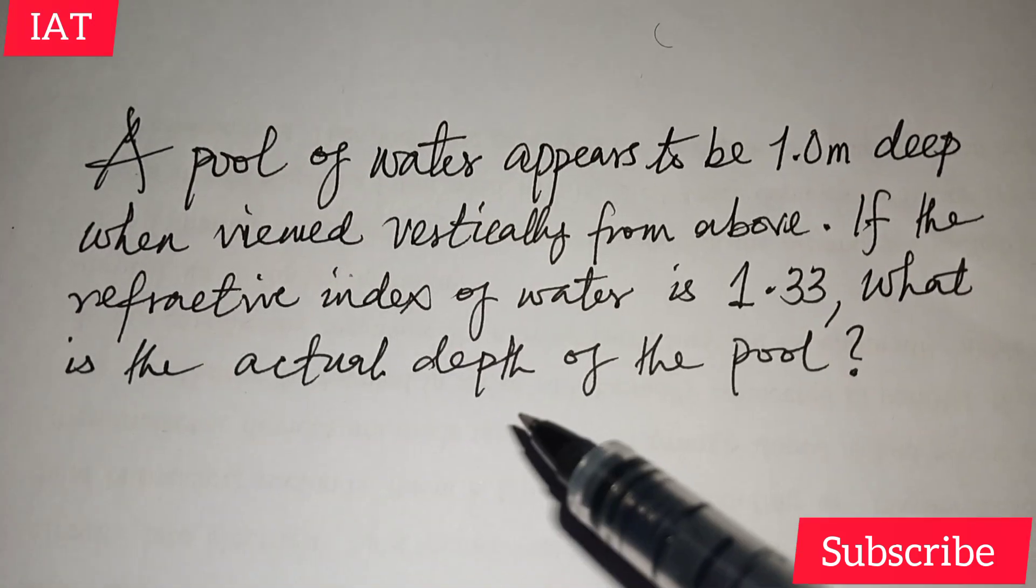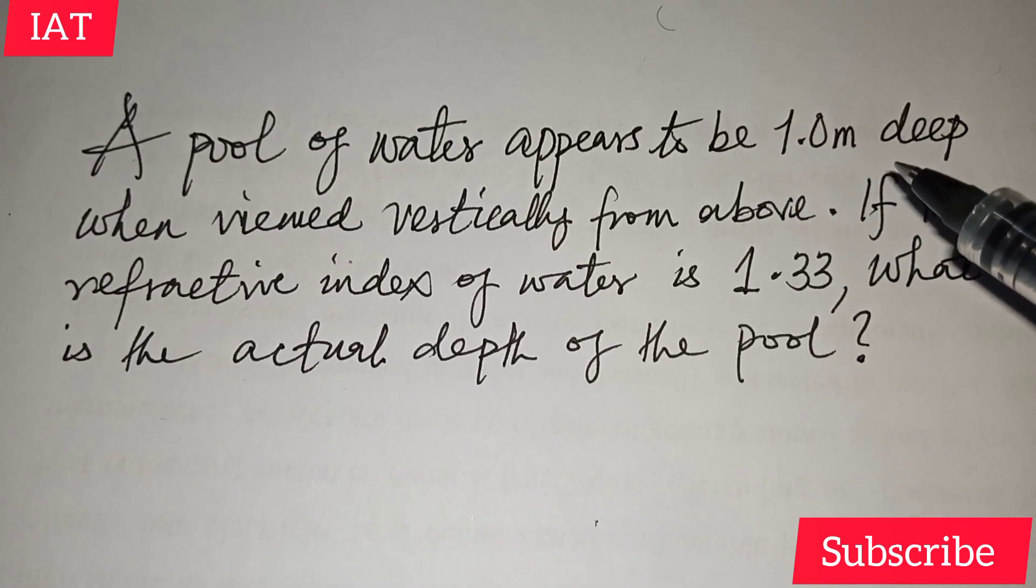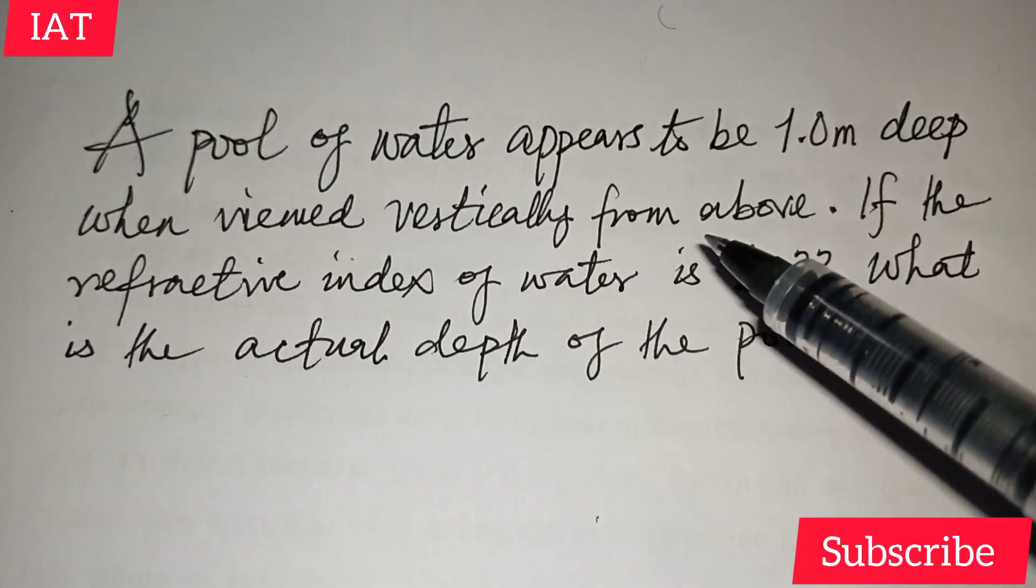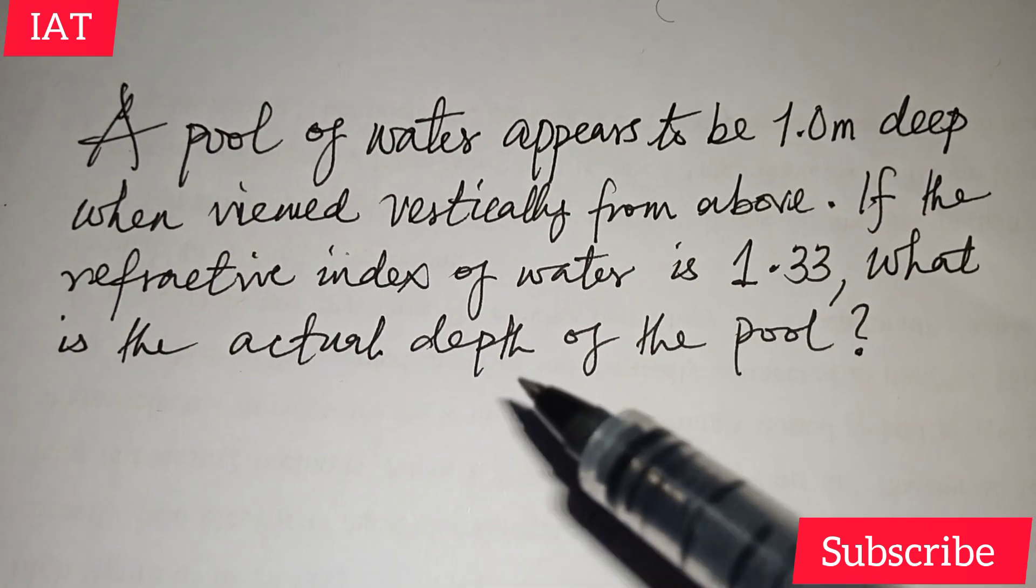In this video, we want to find the actual depth of the pool. The problem states: a pool of water appears to be 1.0 meter deep when viewed vertically from above. If the refractive index of the water is 1.33, what is the actual depth of the pool?